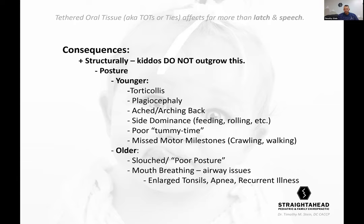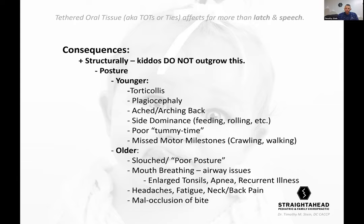Consequences of chronic mouth breathing include enlarged tonsils, apnea, recurrent infections, headaches, fatigue, neck and back pain, and malocclusion of bite. The bite could be off — sideways, underbite, or overbite — and will probably warrant orthodontic work even with a revision.